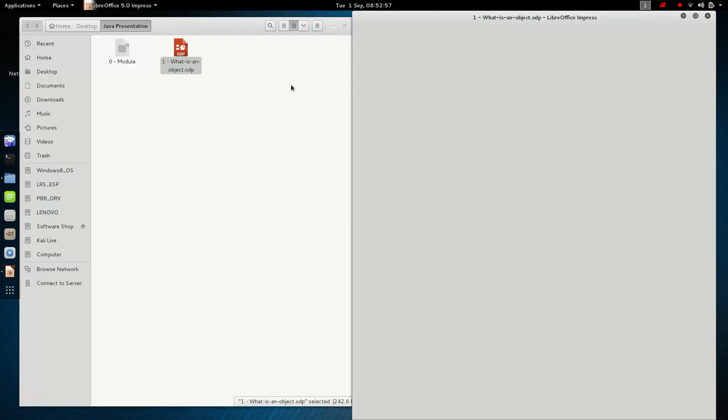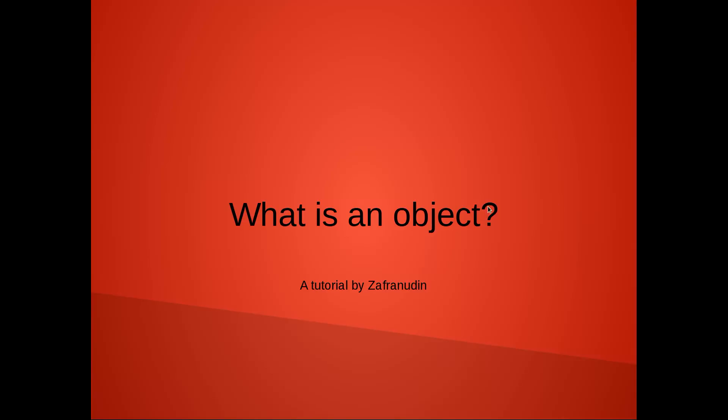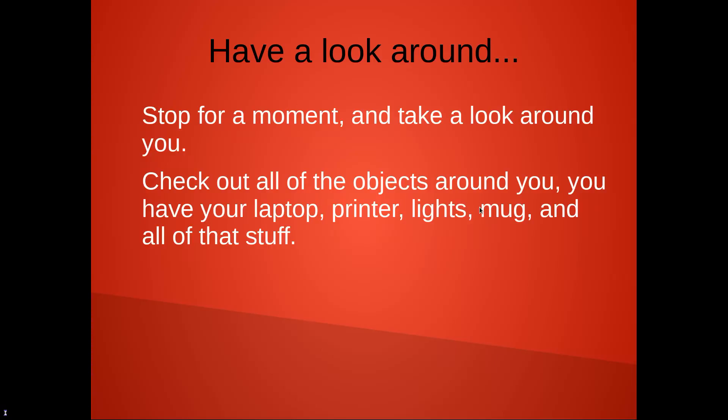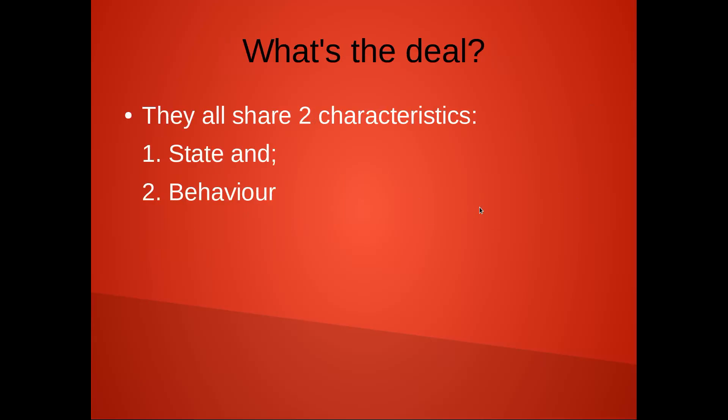I have prepared some presentation for you guys. What is an object? The first thing you need to do is have a look around — stop for a moment and take a look around you. Check out all of the objects around you: you have your laptop, printer, lights, and all of that stuff. I asked you to look around because this is an object oriented programming language, so one way or another they are related. They all share two characteristics: state and behavior.